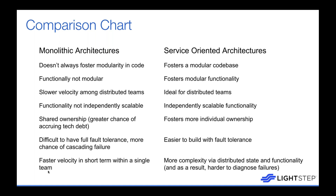With monoliths, in the short term this can allow for faster velocity within a single team. Microservices by default tend to be more complex due to distributed state and distributed functionality. Even if microservices are stateless, there's still state somewhere — usually at the data store level — and this can be hard to understand when diagnosing failures where you don't know which service caused the problem. This is even more pronounced with serverless architectures, where without the right level of contextual observability failures can be hard to diagnose.